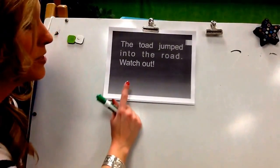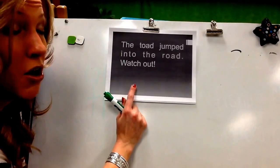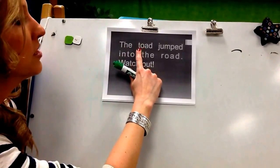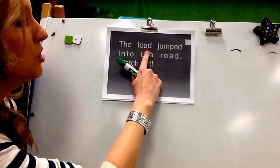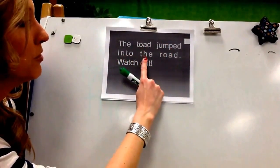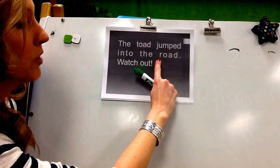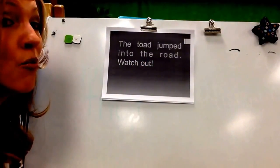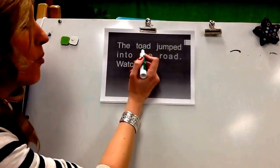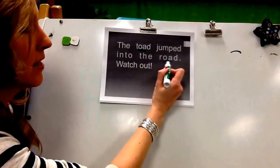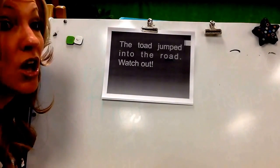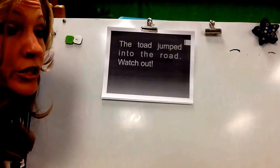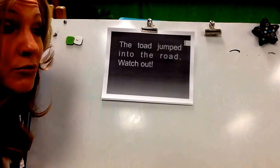Okay, I'm going to read this sentence. And when I see O-A, I'm going to read it as O. The T-O-A-D, toad, jumped into the R-O-A-D, road. Watch out! So what I did as a reader was, when I saw O-A, I read it as O. So when you do your own reading, when you see O-A, I want you to read it as O.